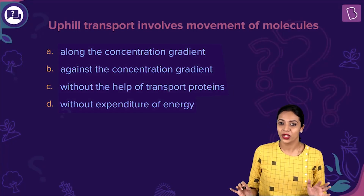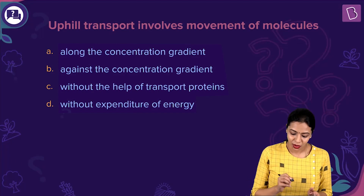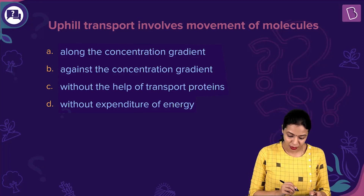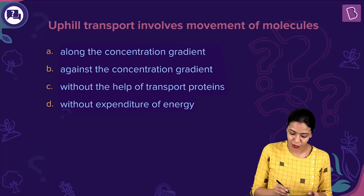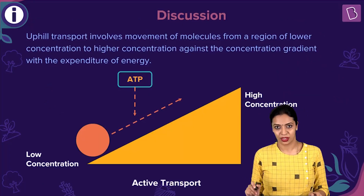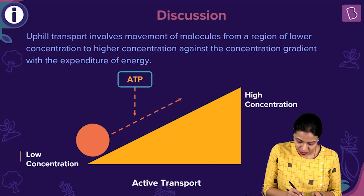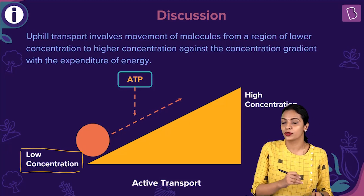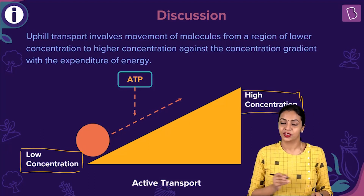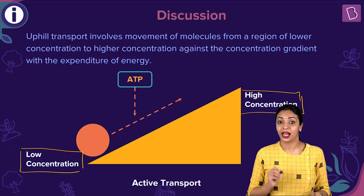Now let us look at the next question: uphill transport involves the movement of molecules — options are along the concentration gradient, against the concentration gradient, without the help of transport proteins, or without expenditure of energy. Uphill transport involves movement of molecules from a region of lower concentration to a region of higher concentration. As seen in the diagram, movement takes place from a region of low concentration to a region of higher concentration. This is known as uphill movement, also called active transport, because transport occurs against the concentration gradient.